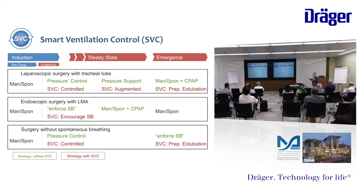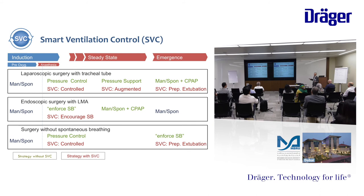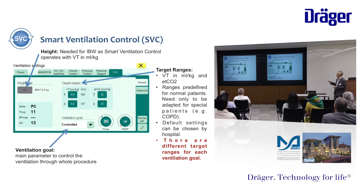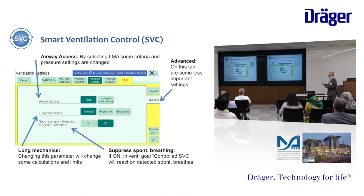And this is what we can do with the smart ventilation control. I just choose smart ventilation control and tell it: my target is controlled ventilation. At the end of surgery, I can tell it: augmented, or prepare for extubation. Here I will choose encourage spontaneous breathing and it will allow the patient to breathe while I assist with pressure support. And here I tell the machine: controlled, then finally prepare for extubation. There are extra settings — the ventilation goal, after entering the patient demographic data, the target range — different target ranges for each ventilation mode as mentioned. These extra settings are not critical at the moment.